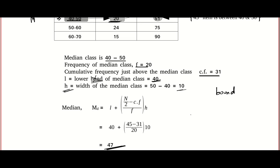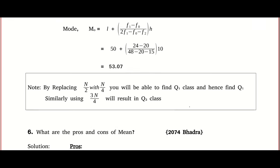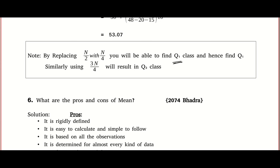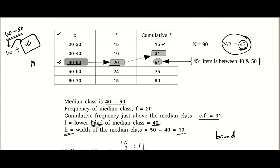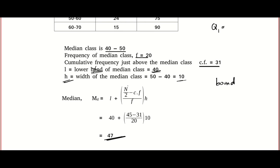We know the answer is between 40 and 50 but not the exact value. So we choose the lower bound and apply the formula using the median class frequency and cumulative frequency to get very close to the median. This is the median formula. For quartile 1 or quartile 3, use the same formula — just replace n by 2 with 25 by 100 into n (for Q1) or 75 by 100 into n (for Q3). For any percentile — say P40 — write 40 by 100 into n, or for P79, write 79 by 100 into n.